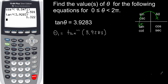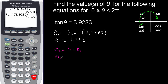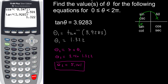So theta one is 1.322. To find theta two, since quadrant one and quadrant three are half a revolution apart, I just add π to theta one: θ₂ = π + θ₁ = 3.14 + 1.322 = 5.161. So the two angles that have a tangent value of 3.9283 are theta one = 1.322 and theta two = 5.161.